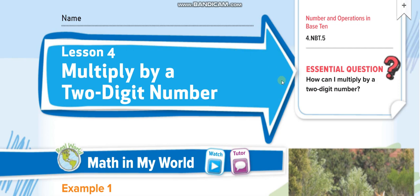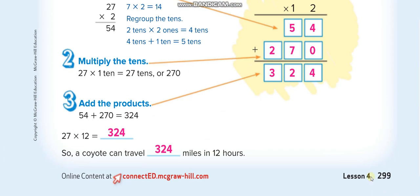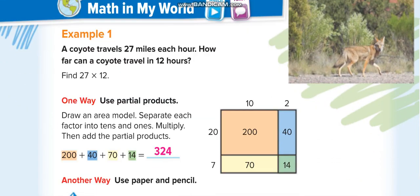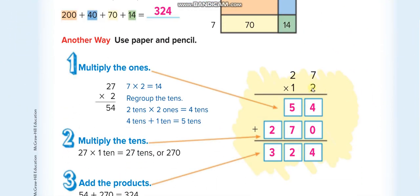Hey everyone, welcome back to my channel Learn Math with Mr. Saad for another video lesson. Today's lesson is for Grade 4, Chapter 5, Lesson 4: multiplying by a two-digit number, page 299. This one is just like the last lesson, but we don't have zero at the ones place.